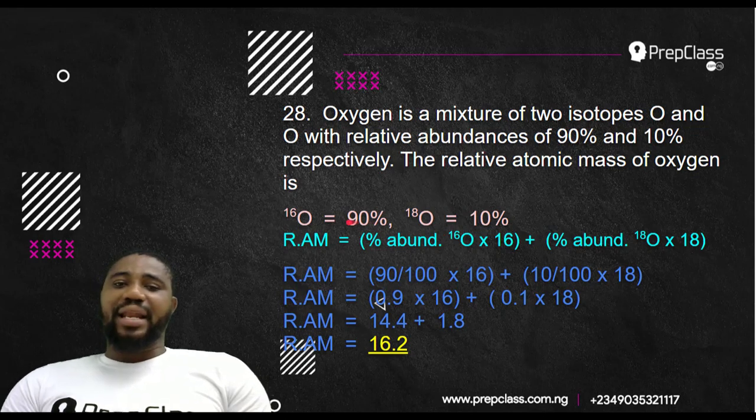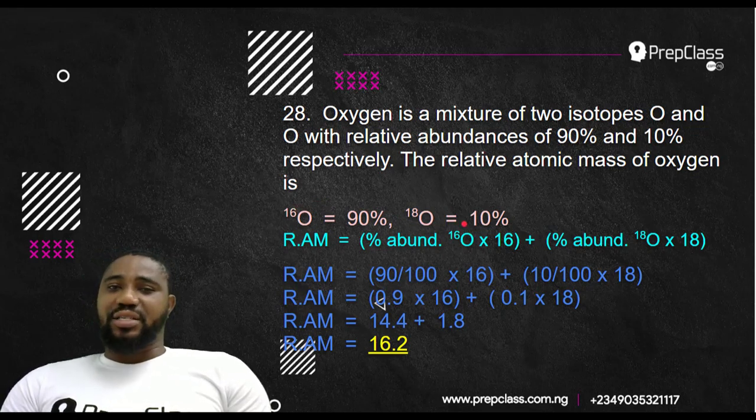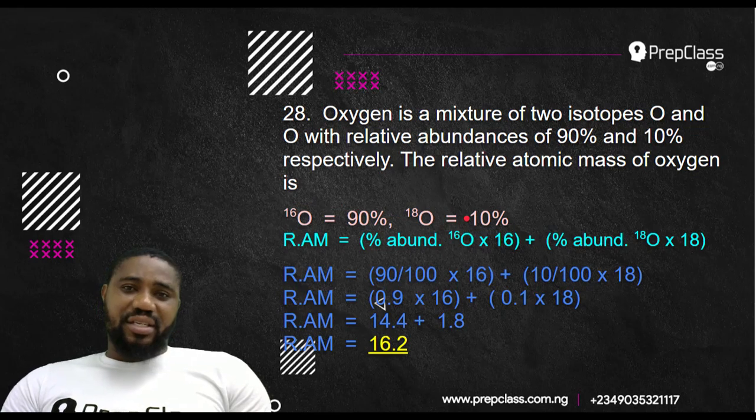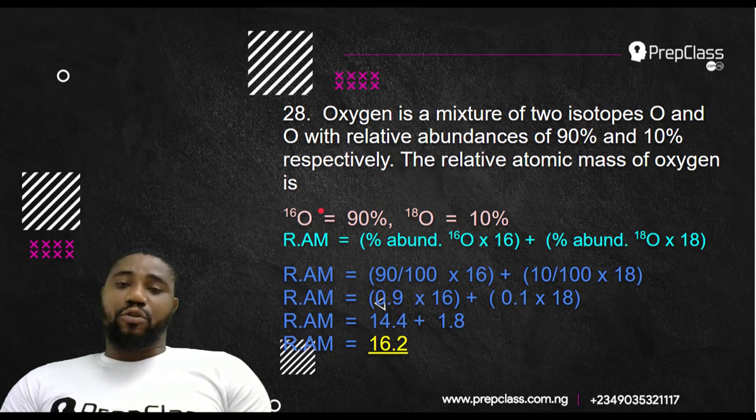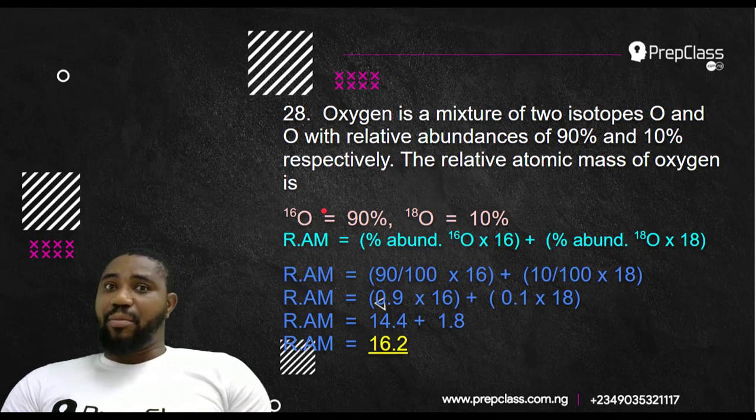The process whereby an element exists in this form, whereby they will have the same atomic number but different mass number is known as isotopy. Carbon also exists in that form. They have the same atomic number, 6, but one has a relative molecular mass of 12, the ordinary carbon that we know, and another one has a relative molecular mass of 14, but that one is a radioactive carbon.